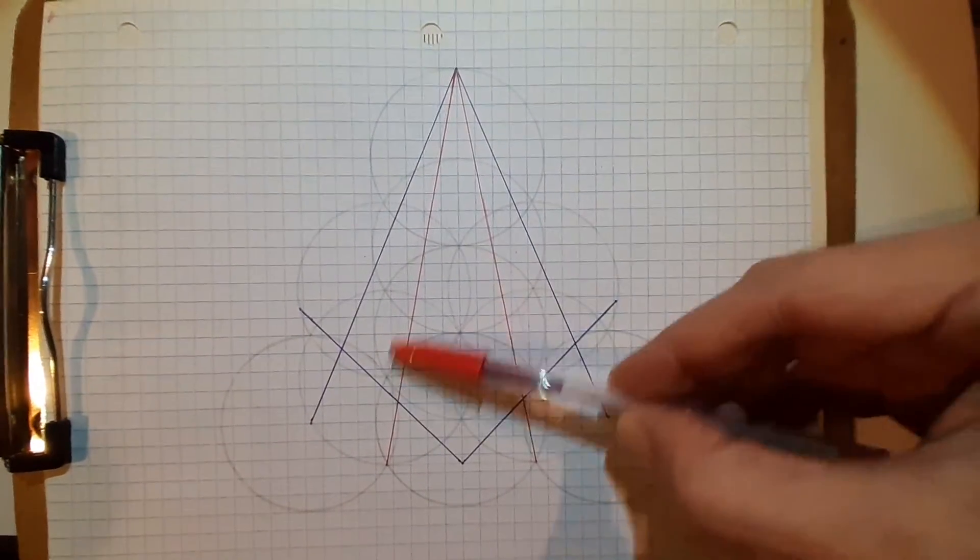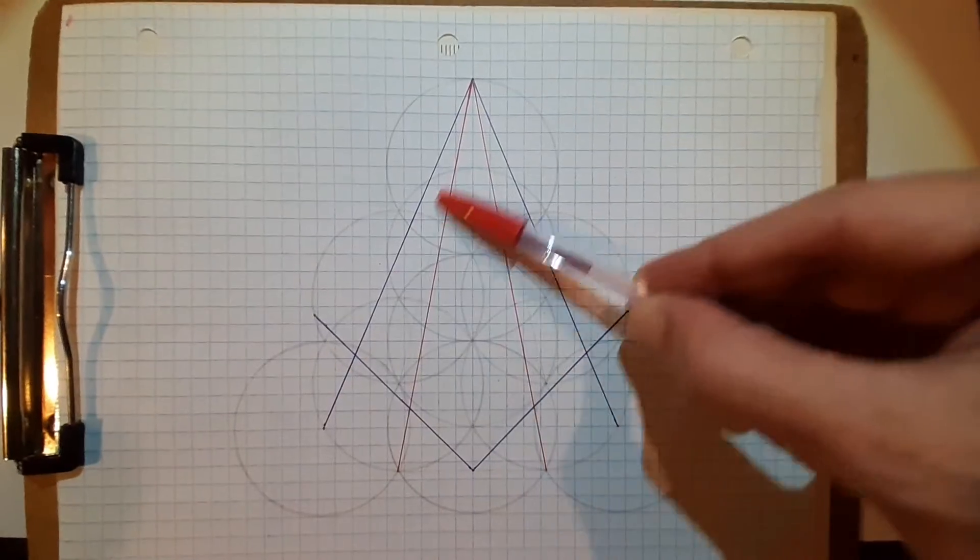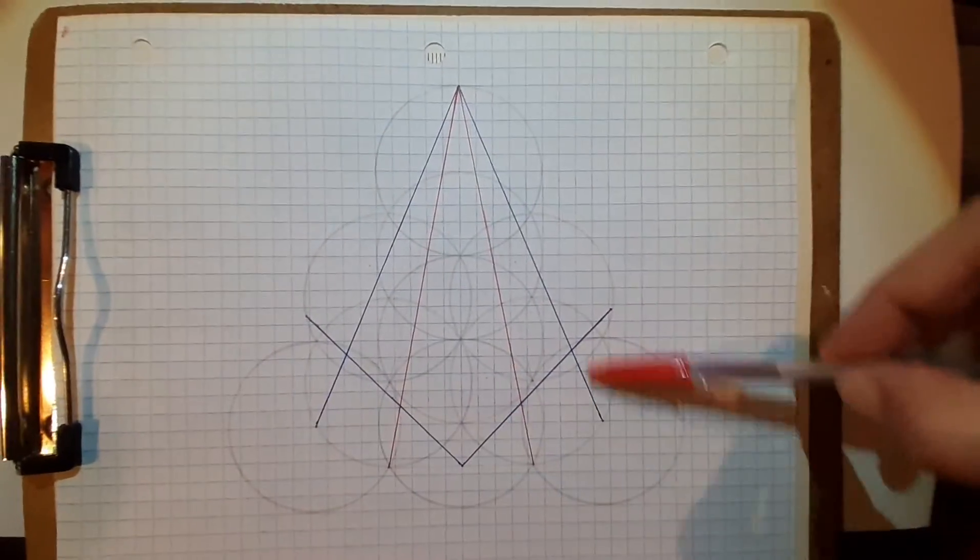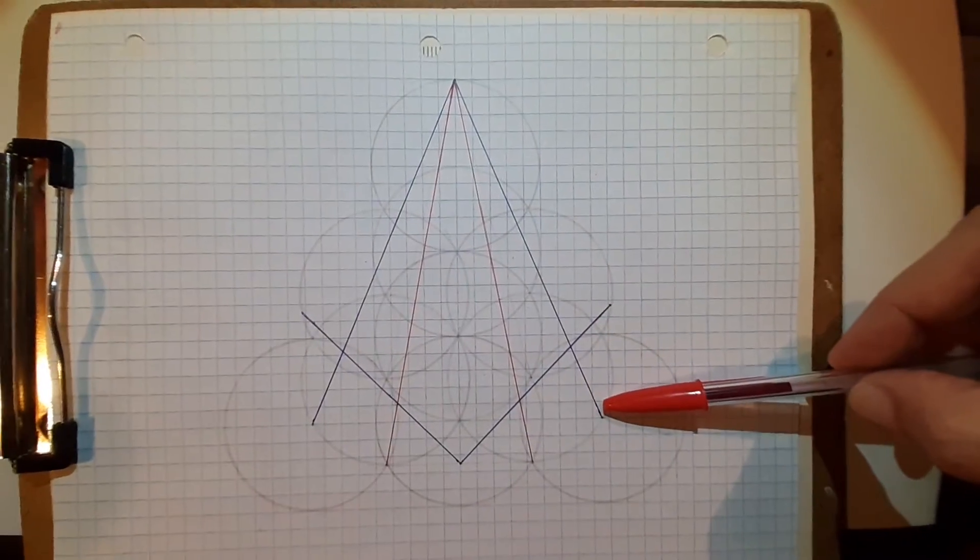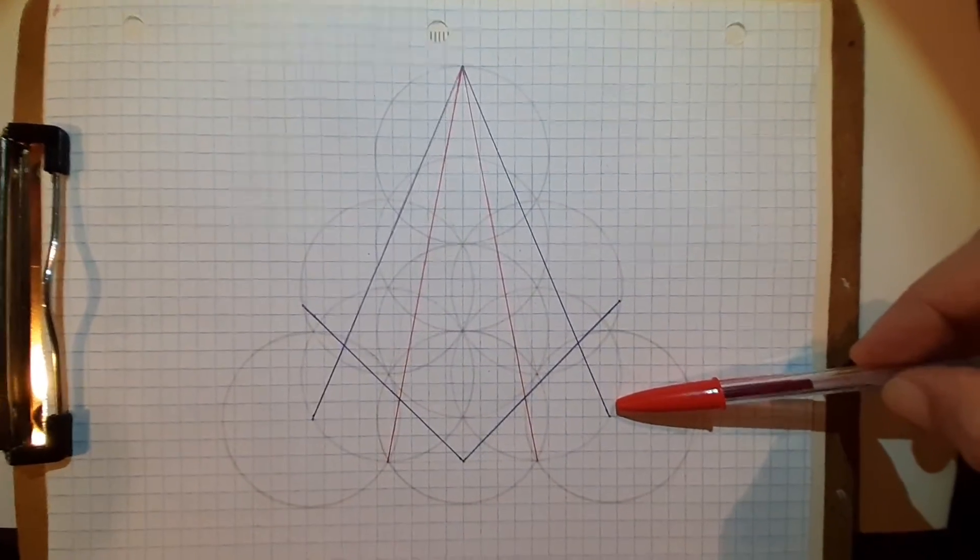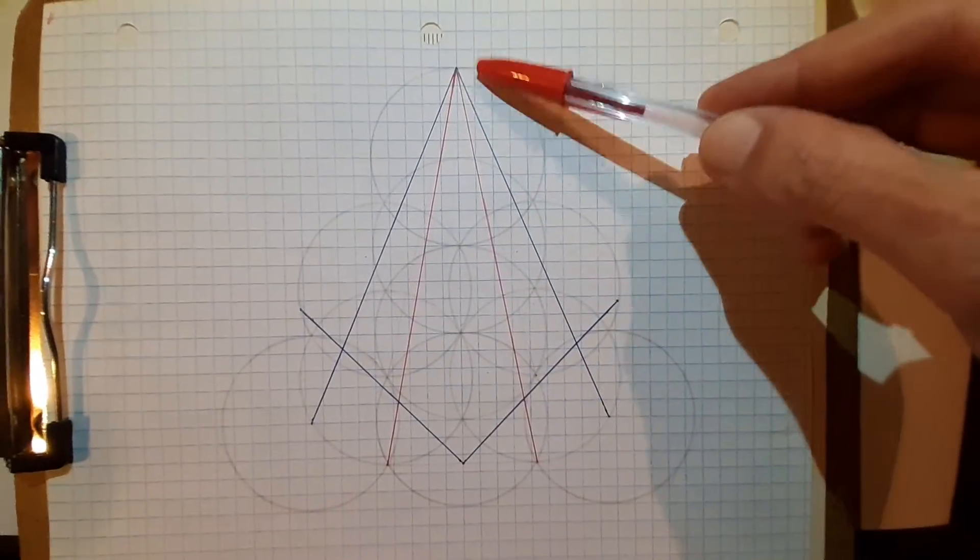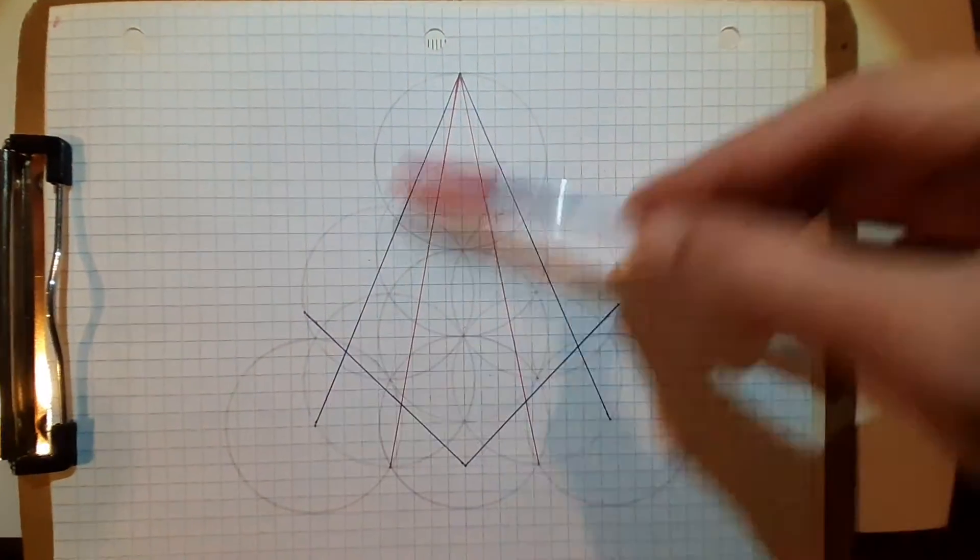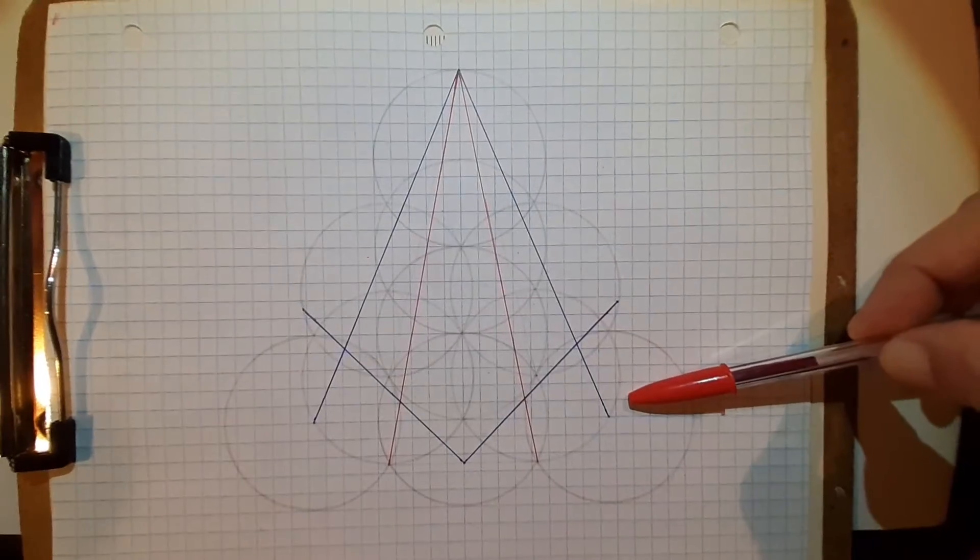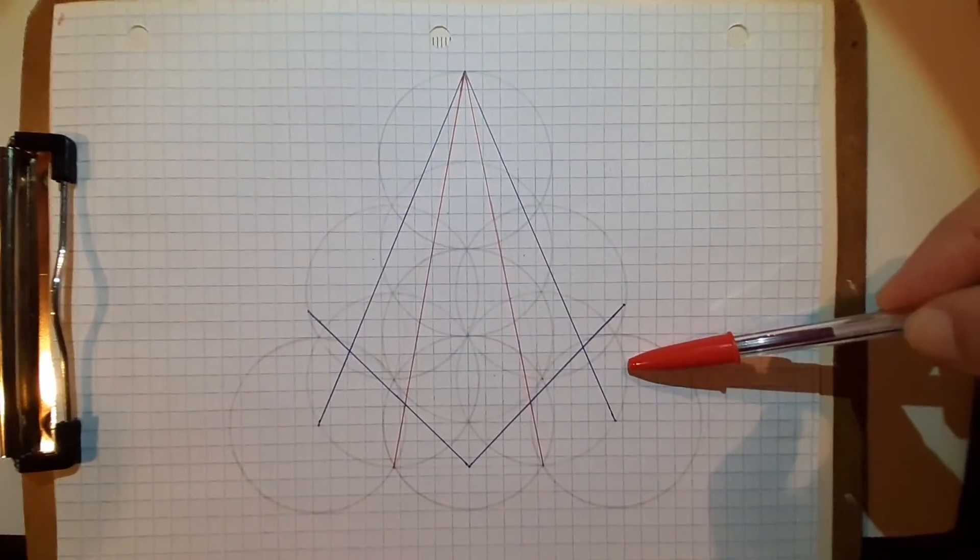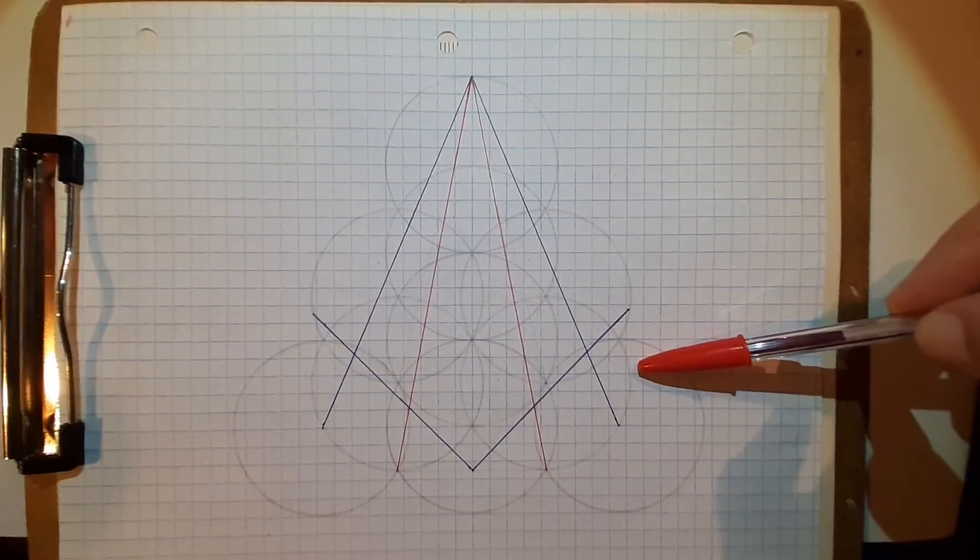Versus the usual which is just going from the center to the center to the center and you get a perfect equilateral 60 degree triangle. This one is if you go from the top to the center, top to that center, you get the 47 degrees.